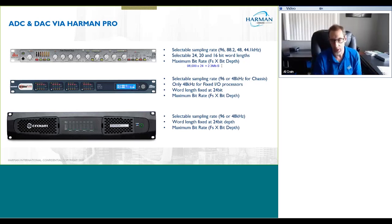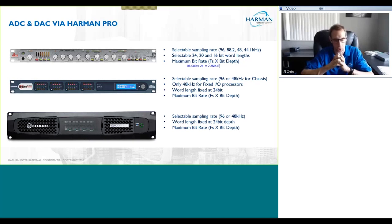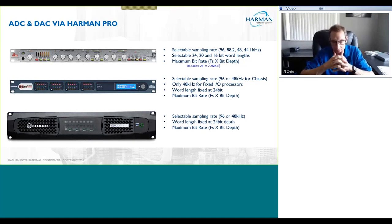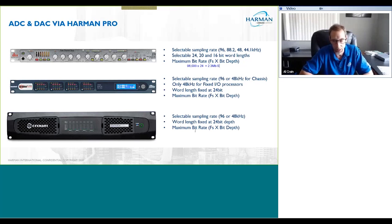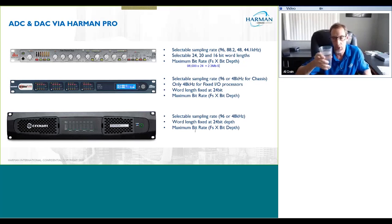You can do the same thing with BSS Audio. If you're using the modular series — the frames with the custom cards — those support 96/24 as well. All the fixed dial devices from BSS support 48 kHz, and everything in BSS is fixed at 24-bit depth. The Crown DCi series amplifiers support 96 or 48 kHz, and the word length or bit depth is fixed at 24 bits. The math is simple: it's just the number of bits per sample times the sample frequency.